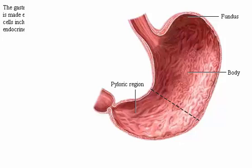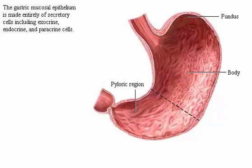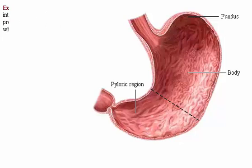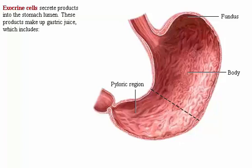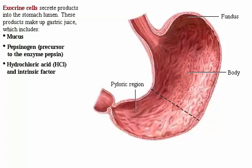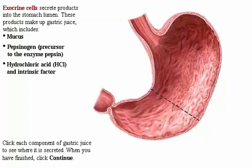The gastric mucosal epithelium is made entirely of secretory cells, including exocrine, endocrine, and paracrine cells. Exocrine cells secrete products into the stomach lumen. These products make up gastric juice, which includes mucus, pepsinogen (the precursor to the enzyme pepsin), hydrochloric acid, and intrinsic factor. Click each component of gastric juice to see where it is secreted.